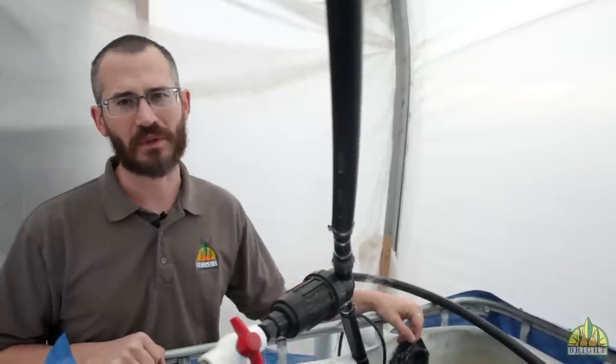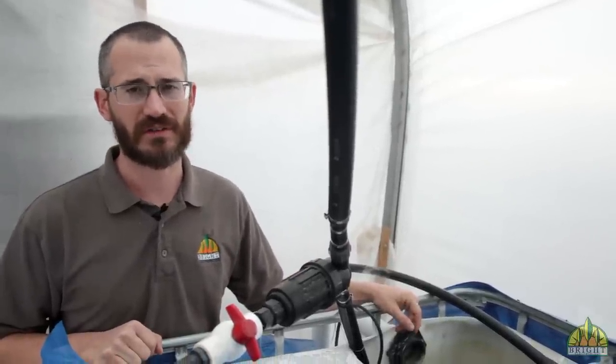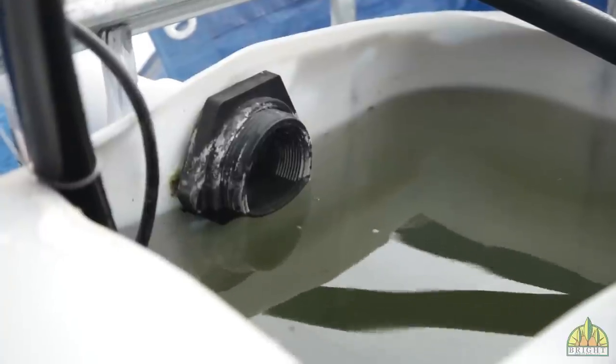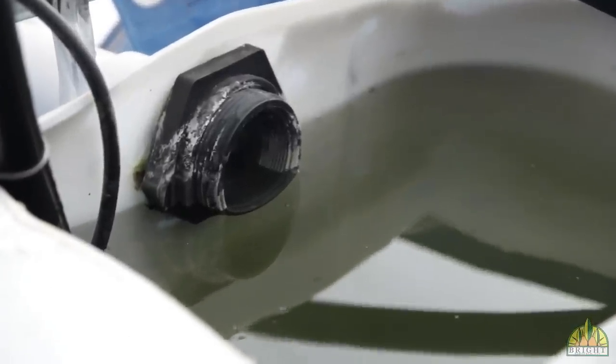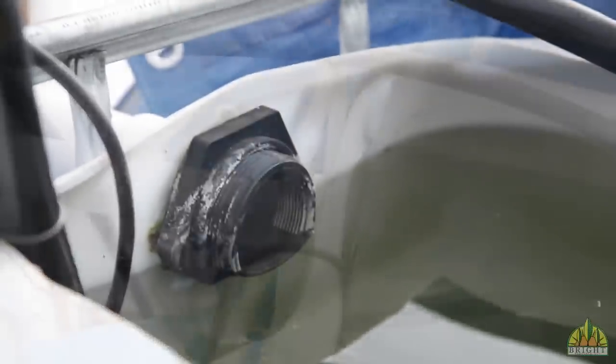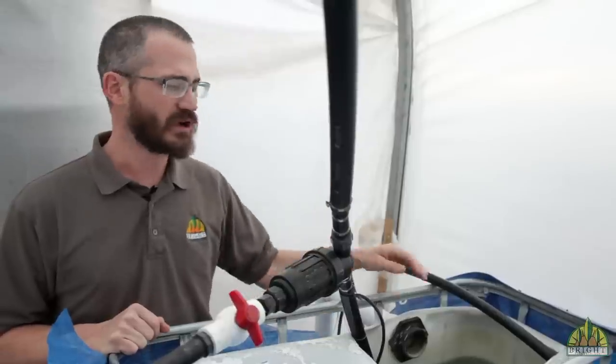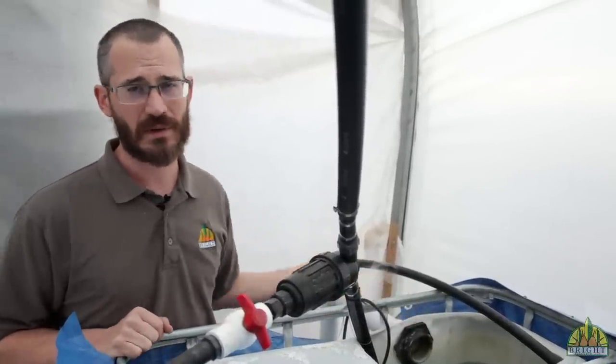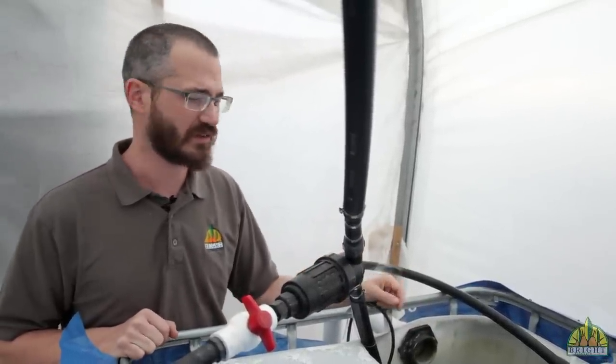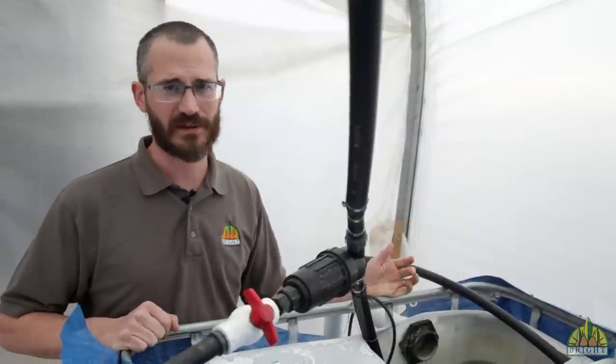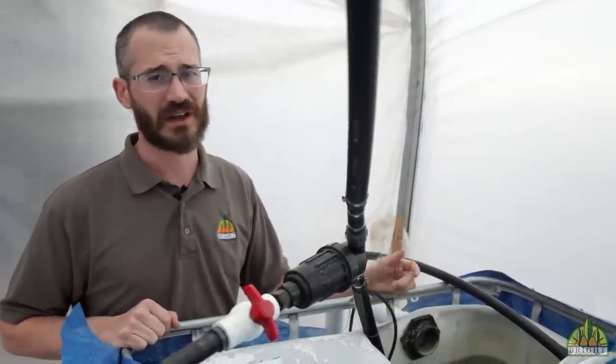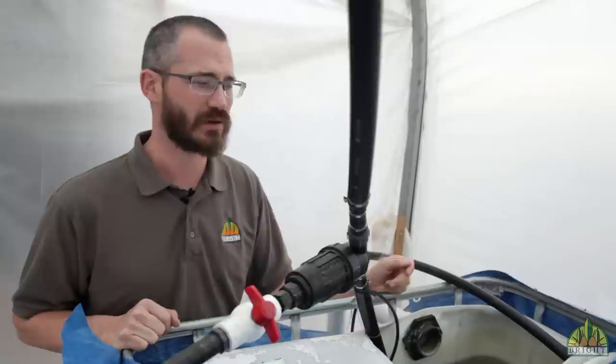So Hayden has an overflow plumbed in on this nutrient mixing tank that basically sends water back to his sump tank. And the reason he has this is because if this pump operates overly well, if the system is overly full, you don't want to overflow your mixing tank. You want to be able to send that back to the sump. So that's kind of a nice thing that he put in there. It's really inexpensive. It's not super expensive to put in. It can save you a lot of trouble and a lot of hassle in the long run.